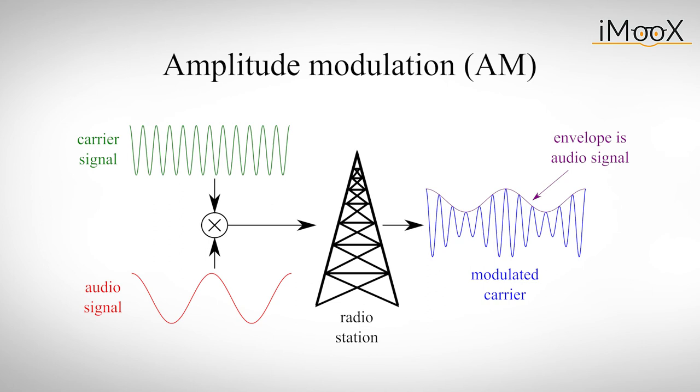Amplitude modulation, or AM, is a yesteryears way to transmit a radio signal. Even though it's outdated, you can still receive AM radio in most parts of the world, because its principle is so easy. The radio station transmits a carrier signal with a frequency somewhere between a few hundred and some thousand kilohertz. The carrier signal is modulated in amplitude with the waveform of the audio signal.